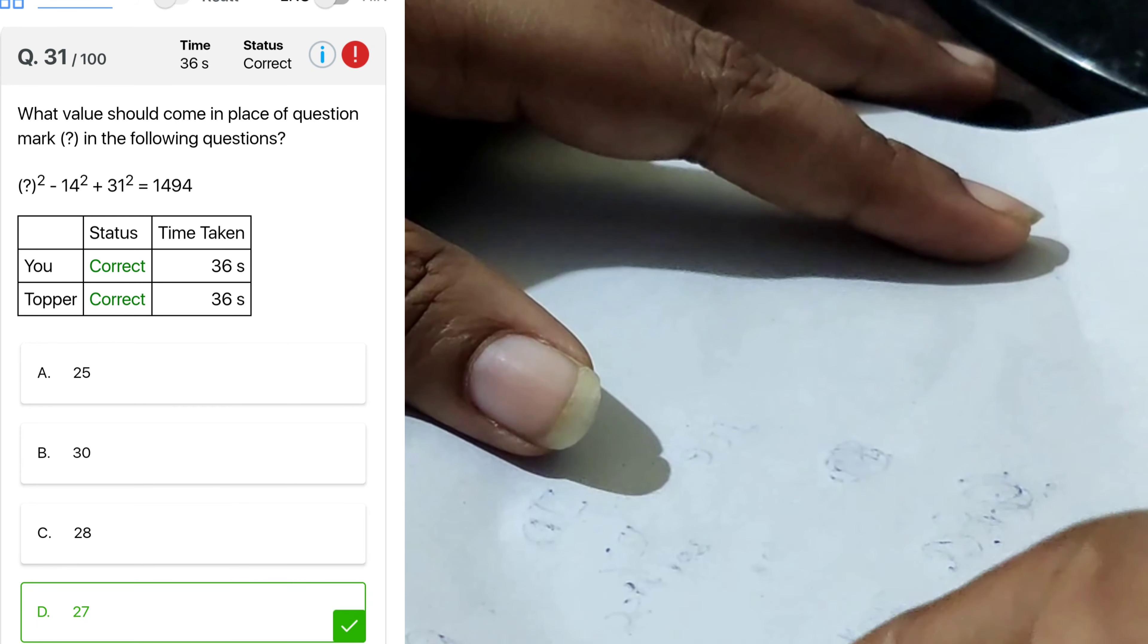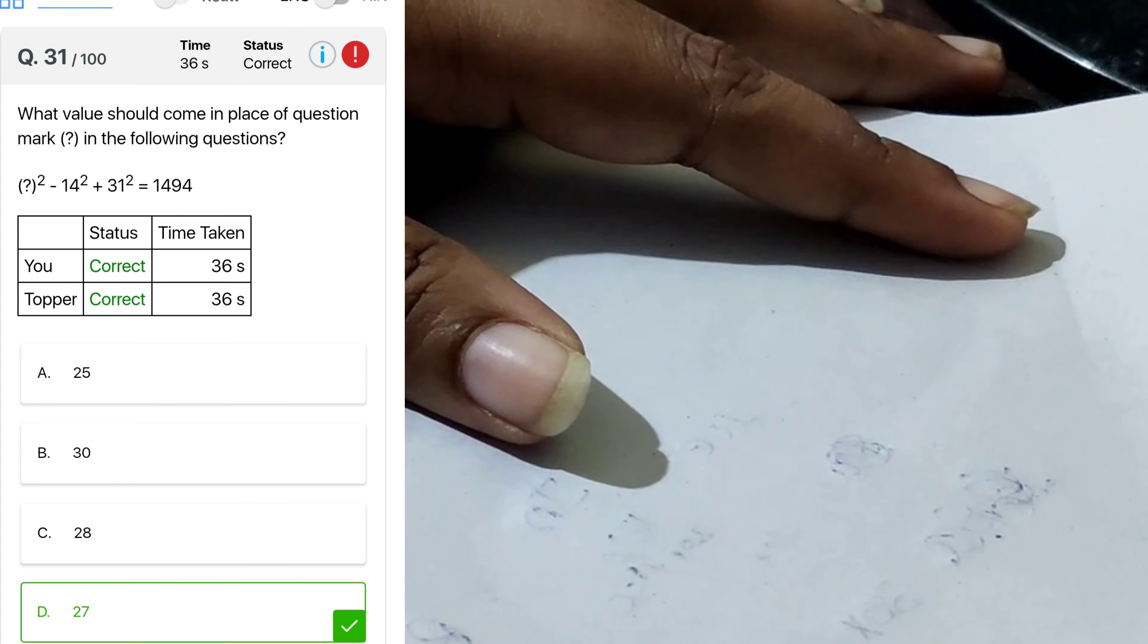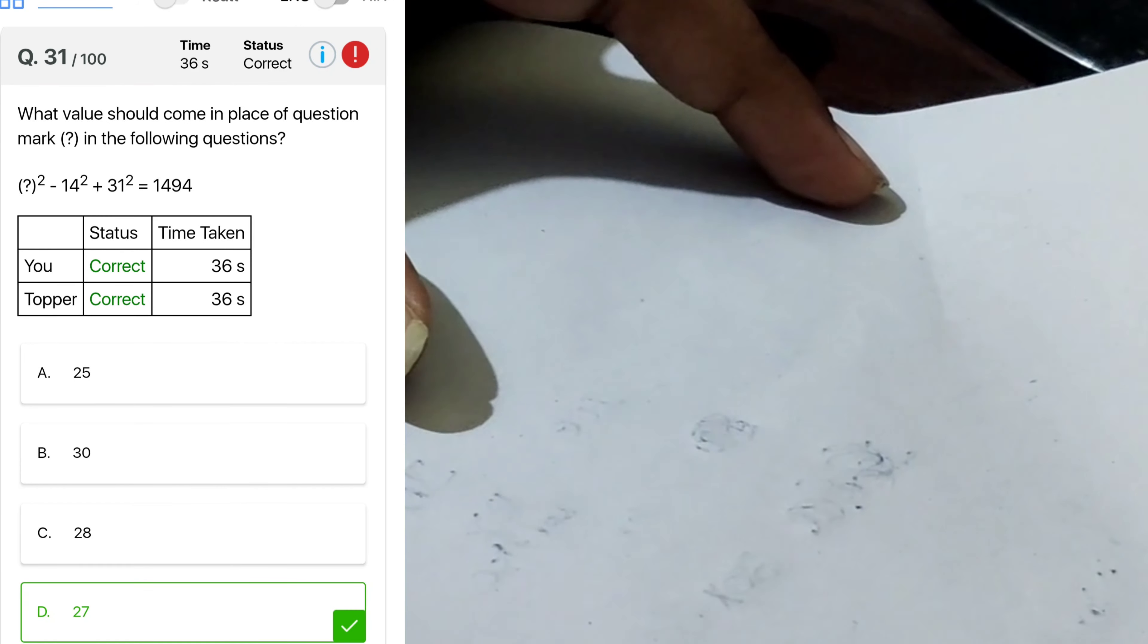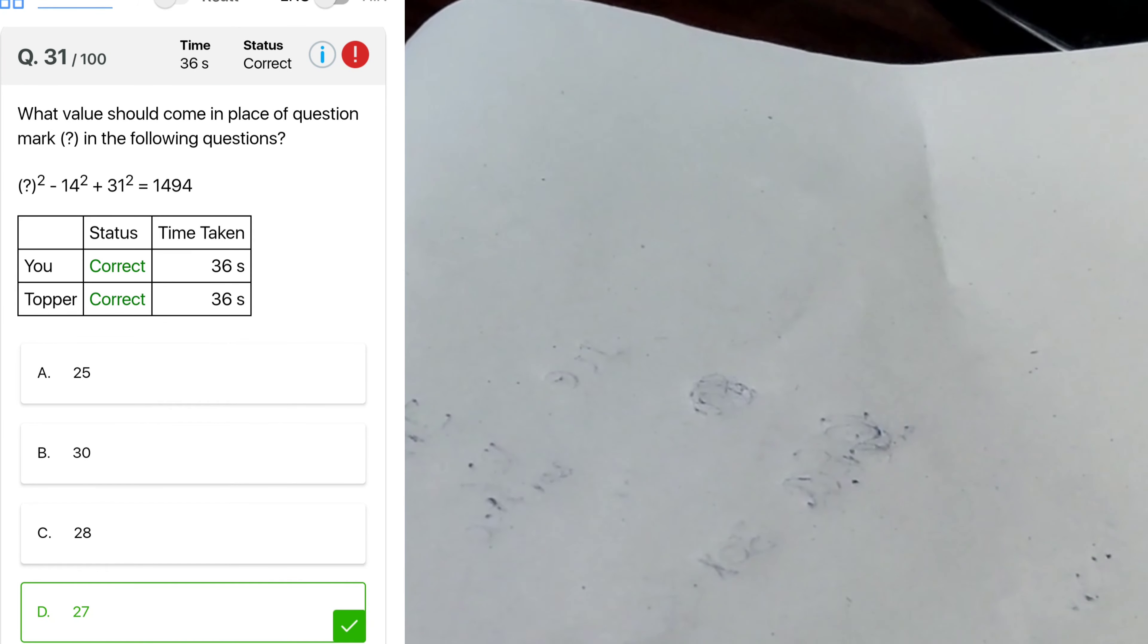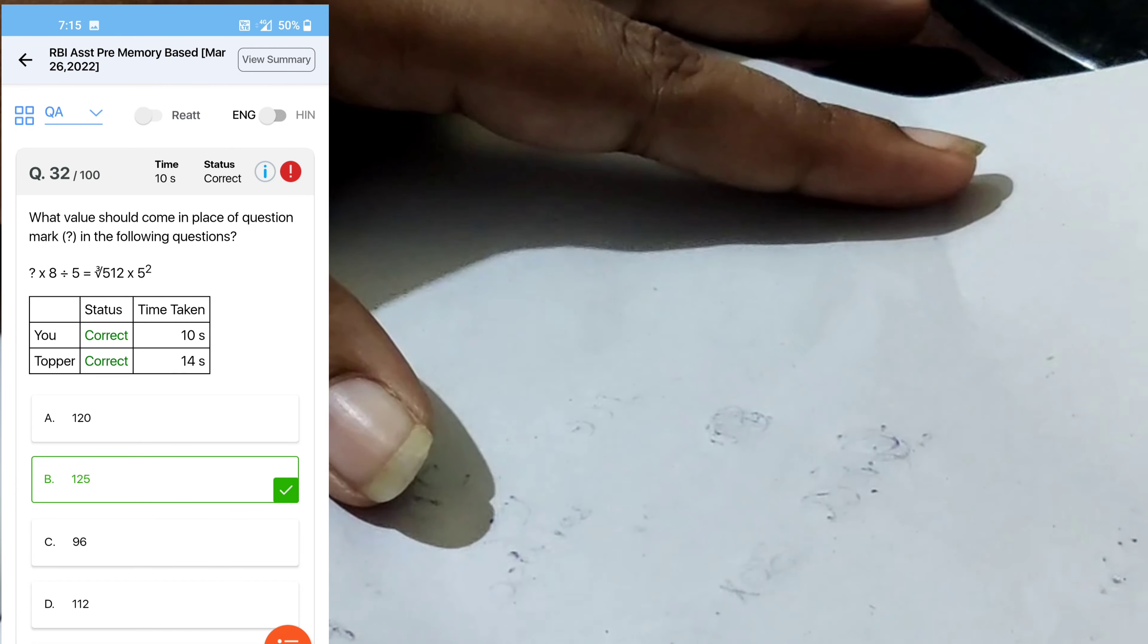English section has completed, next we will go to the quant section. So x squared minus 296 plus 961, so 5, 6 and 665 equal to 1494, 665 subtract 928, 729, x is 27 whole squared. Next, x into 8 divided by 5 is equal to 1825, 88 cancel, 5 into 25 is 125, option B.